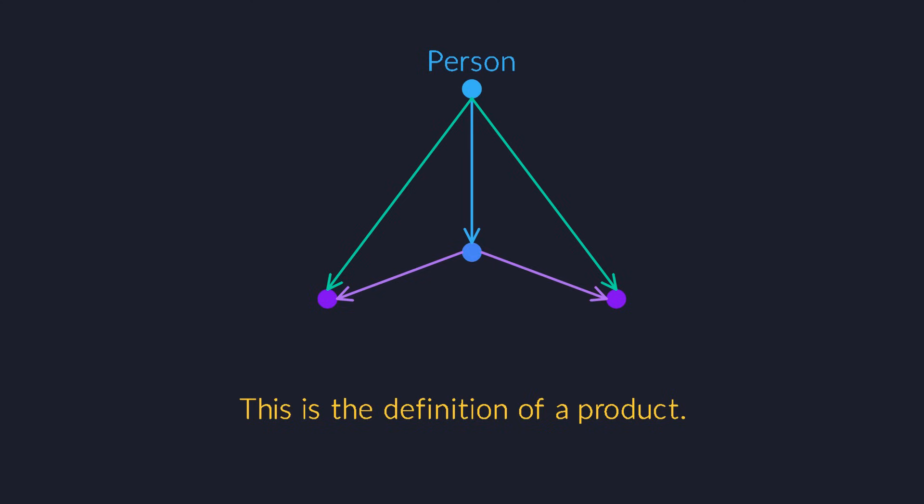It defines the type in the middle as the product of the two types at the bottom, provided that we can always construct a product from some unknown and arbitrary type p.